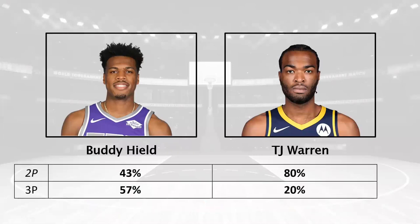When you look at how Buddy Hield and TJ Warren take their shots, you see that Buddy Hield takes much fewer two-point shots than TJ Warren and many more three-point shots. So he's taking far more shots from an area that gives him a higher point value every time he shoots.